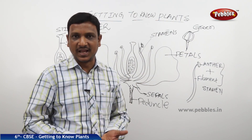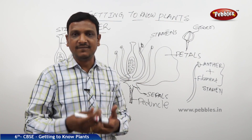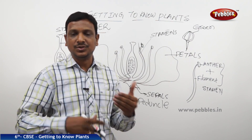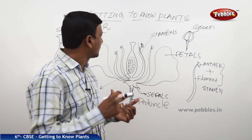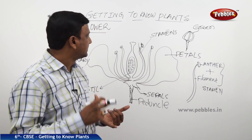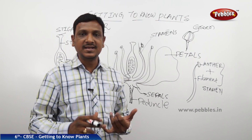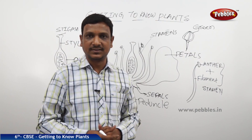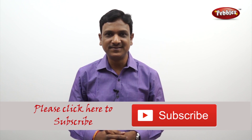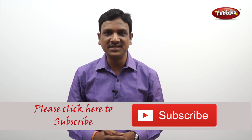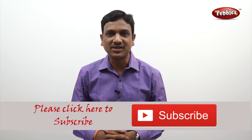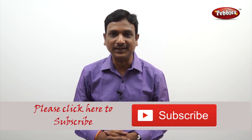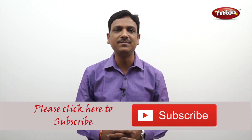We have gone through the different parts and their functions. We understood so many things about the plant and its functioning — the inner structure and working of the plant — covering leaves, roots, stem, and flower. If you liked this video, please give a thumbs up and subscribe to our channel to get more videos on the CBSE syllabus.